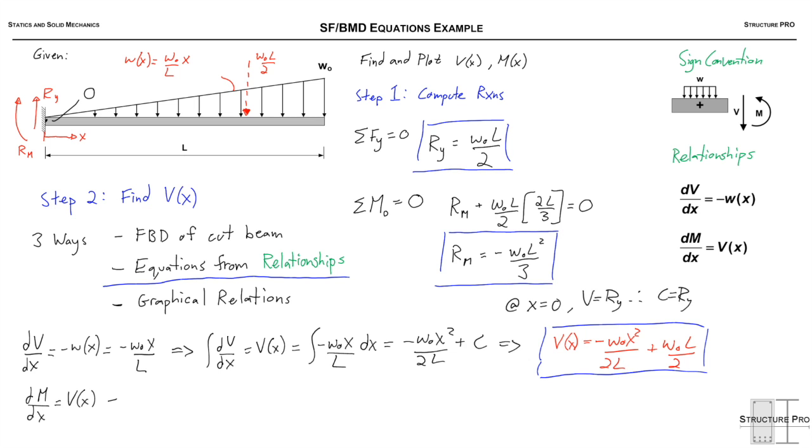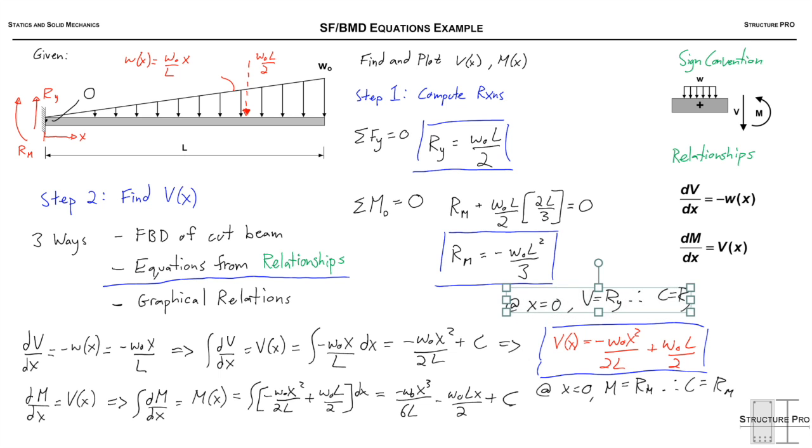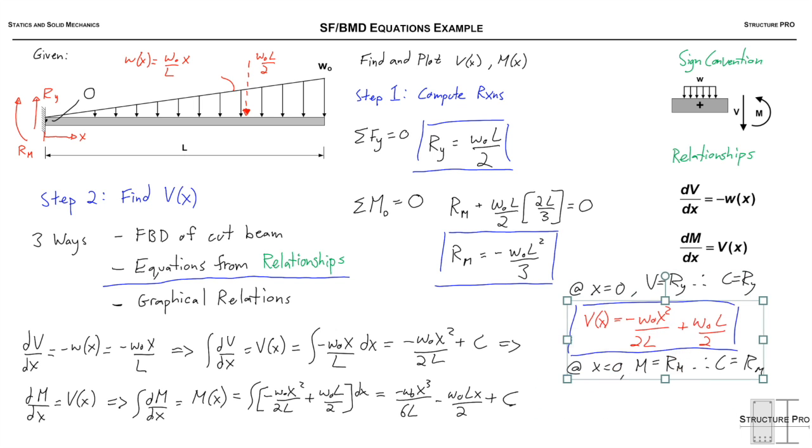Now that we have the shear, we can get the moment in a very similar way. So dM over dx is equal to the shear function. Therefore, if we integrate that, we can get M(x). So we're going to integrate that whole big block. I'll spare you the verbals. The long and short of it is that we end up with a cubic function with another constant C. And so we can solve for that constant again by taking the value of the moment at x equals 0. And in this case, that's the reaction Rm. So I'm just going to move stuff around a little bit to make room for this equation. Now we can write out our full moment equation. So M(x) equals negative w0x cubed over 6L minus w0Lx over 2 minus w0L squared over 3. So nice work. That's it. We've got the equations for the shear and moment.